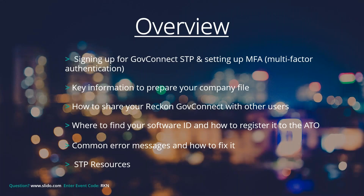For this webinar we'll go through: how to sign up for GovConnect STP and set up your multi-factor authentication; key information to prepare your company file; how to share your Reckon GovConnect with other users; where to find your software ID and how to register it with the ATO; common error messages and how to fix them; and where to find useful Single Touch Payroll resources.